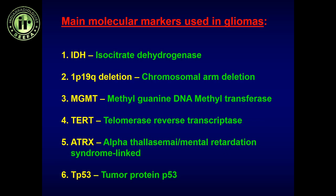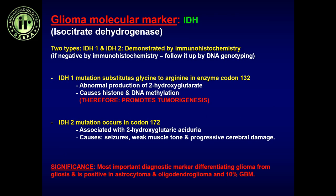The most important tumor markers we talk about in radiology are IDH (isocitrate dehydrogenase), 1p19q chromosomal deletion, MGMT, TERT, ATRX, and P53 (tumor suppressor protein 53). IDH has two types: IDH1, which substitutes glycine to arginine in enzyme codon 132 and is associated with tumorigenesis; and IDH2, which is a mutation in codon 172 associated with seizures, weak muscle tone, and progressive cerebral damage.